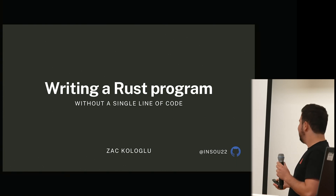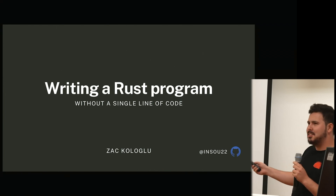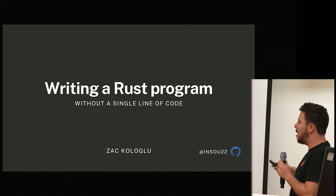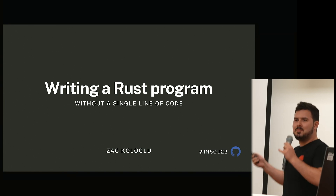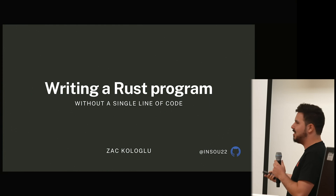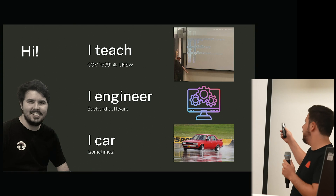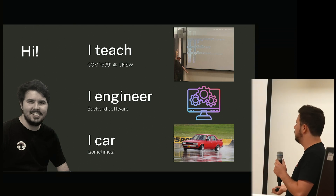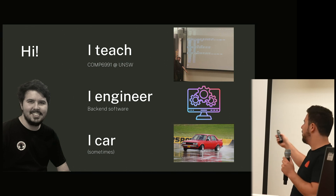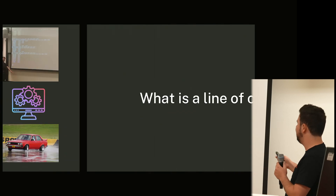Hello everyone, I am Zach, and this talk is writing a Rust program without a single line of code. It's gonna need to be kind of quick and a little bit crazy, so perk up, sit up and see if we can get through this — if you get confused, that's fine, it's probably gonna happen. I teach Comp 6991 at UNSW, a Rust-focused course we introduced just last year. I also am a back-end software engineer at Canva the rest of the time, and sometimes I car. That's basically my whole life.